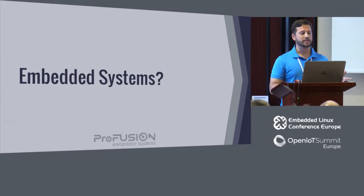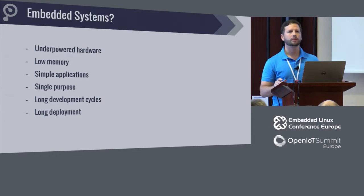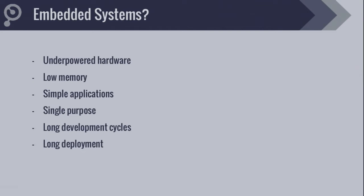So what is embedded systems? We need to define it — it's a very broad term. When you ask people, they think: underpowered, not a powerful machine, cheap, low memory, meant to run simple applications, usually single-purpose, long development cycles — like you start a project and run it for ten years or more. You create your own distribution and have a long deployment. Is that the case?